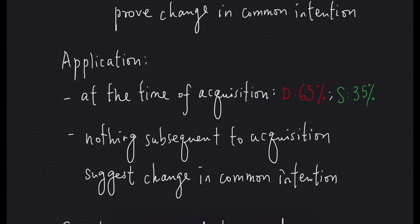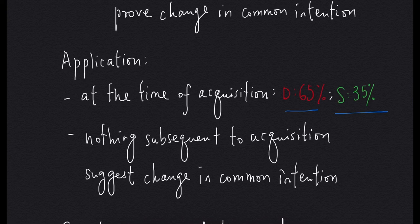Applying Lord Neuberger's approach to the present case: at the time of acquisition, Ms. Dalton contributed 65% and Mr. Stagg contributed 35%. Nothing suggests that there is a change subsequent to acquisition. Therefore, the appeal should be dismissed. So as you can see, the majority and minority approach reached the same conclusion.